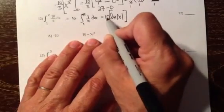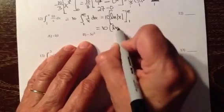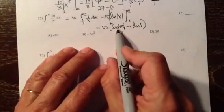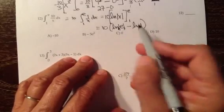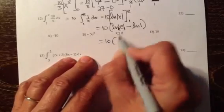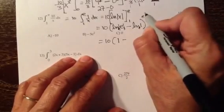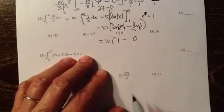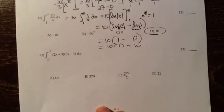The constant multiplier waits in front: 10 times ln of x. Plug in the upper limit e first: ln of e — the absolute value of e is just e since e is about 2.7. Then subtract natural log of 1. Natural log of e equals 1 because e to the first power is e. Natural log of 1 equals 0 because e to the 0 power is 1. So we get 10 times (1 minus 0), which is 10. The answer to number 12 is D.